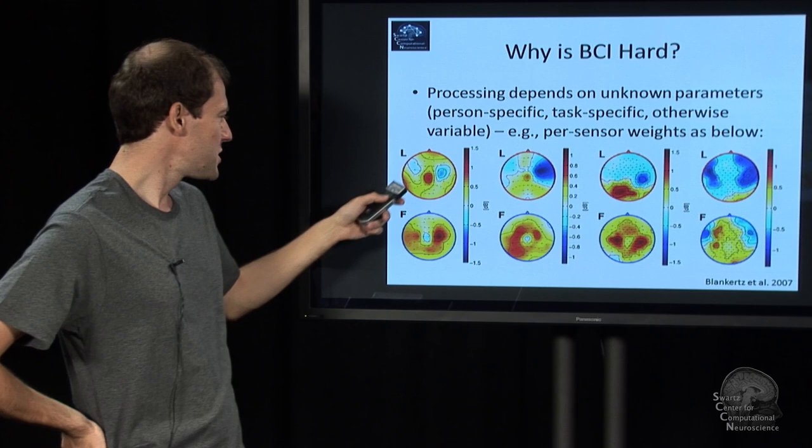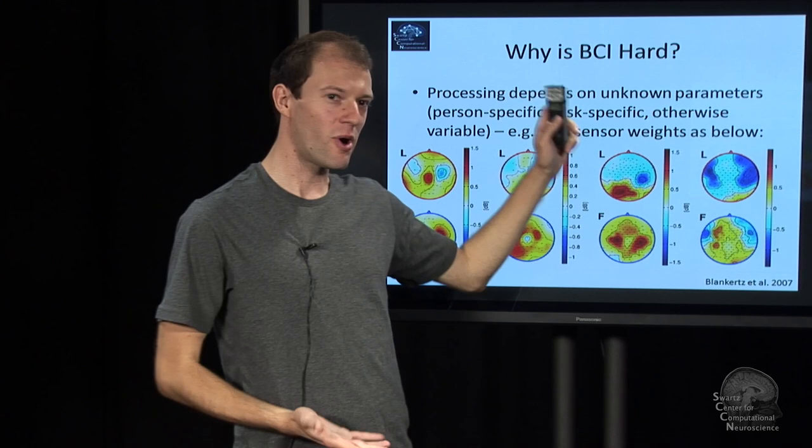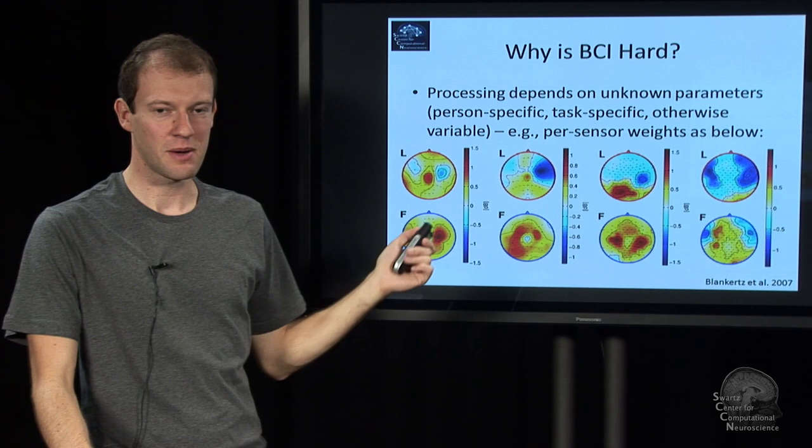So that's importance maps or you can say weights or patterns for four different people doing the same task. And you see they vary quite a bit, but importantly they actually vary so much that in some cases you have the opposite sign in the map. So if you use this person's model on another person, you get the exact wrong output. And so you really need to adapt to the person to be able to do a good job.